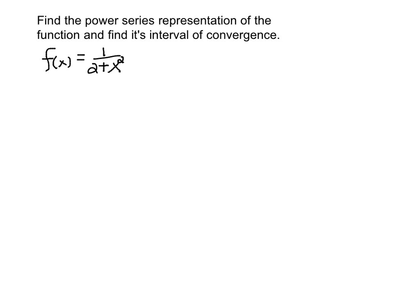Find the power series representation of the function and find its interval of convergence. The function f(x) is 1 over the quantity 2 plus x squared. We start by building off of the geometric series rather than using a Taylor series from scratch. Recall that 1 over 1 minus x equals the summation from n equals 0 to infinity of x to the n.